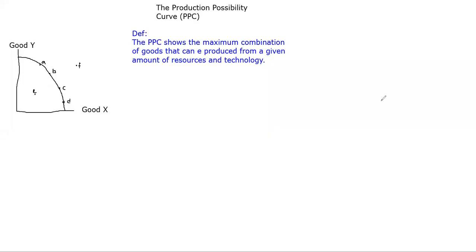The production possibility curve, the PPC - starting with the definition: the PPC shows the maximum combination of goods that can be produced from a given amount of resources and technology. When we talk about combination of goods, any particular point on the PPC shows a particular quantity you can produce of Y and a particular quantity of X. The keyword here is 'can' - what could possibly be produced.